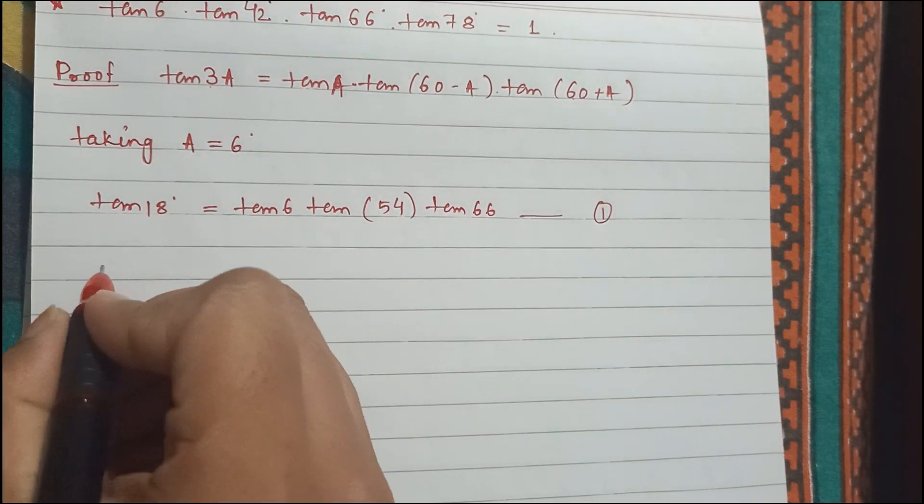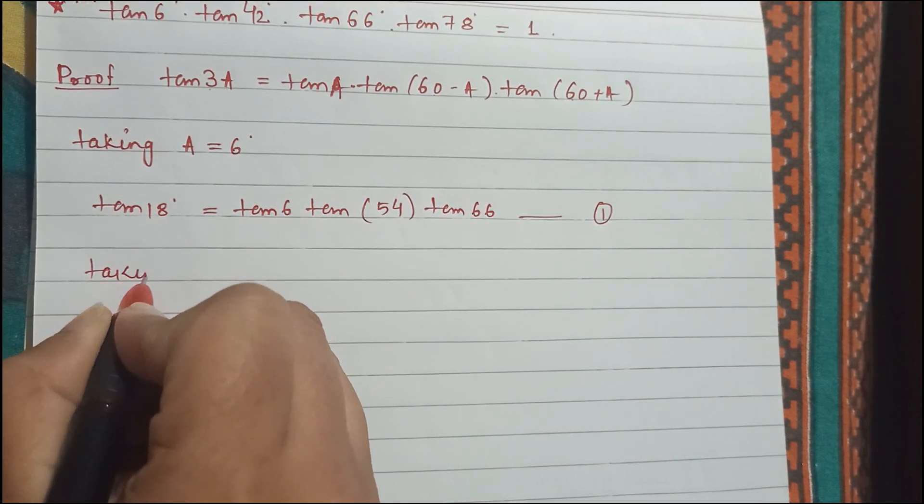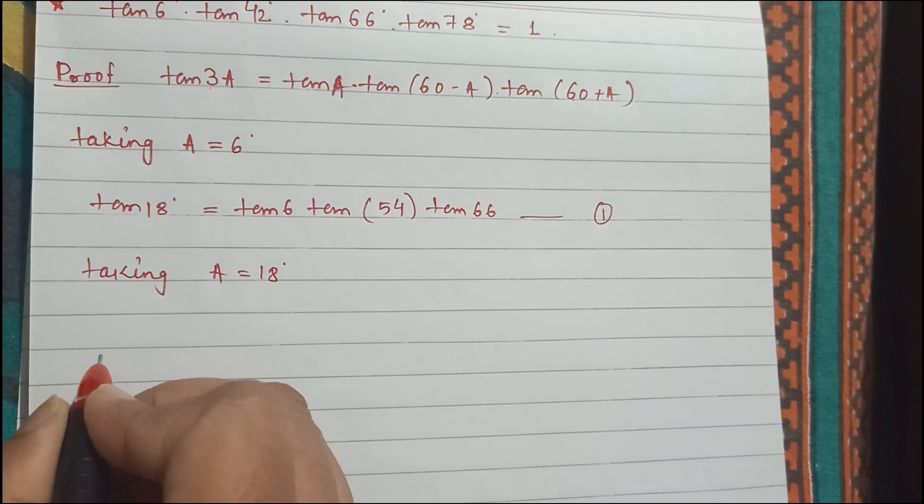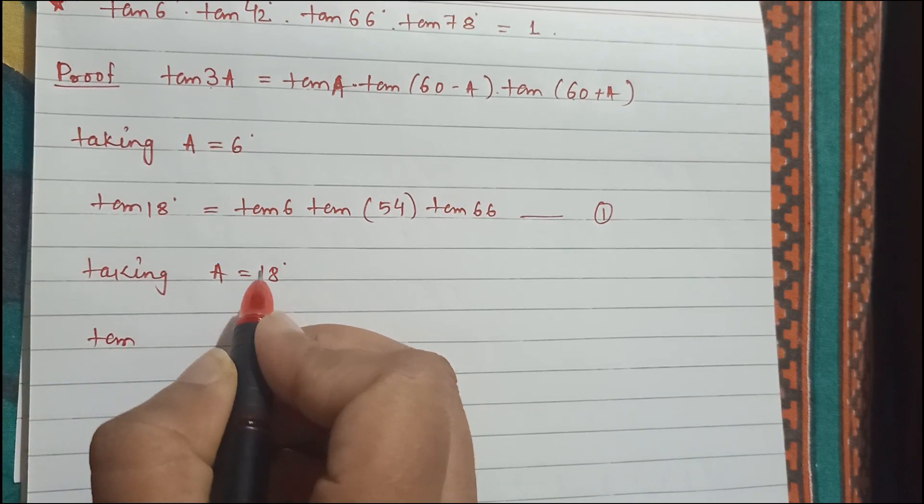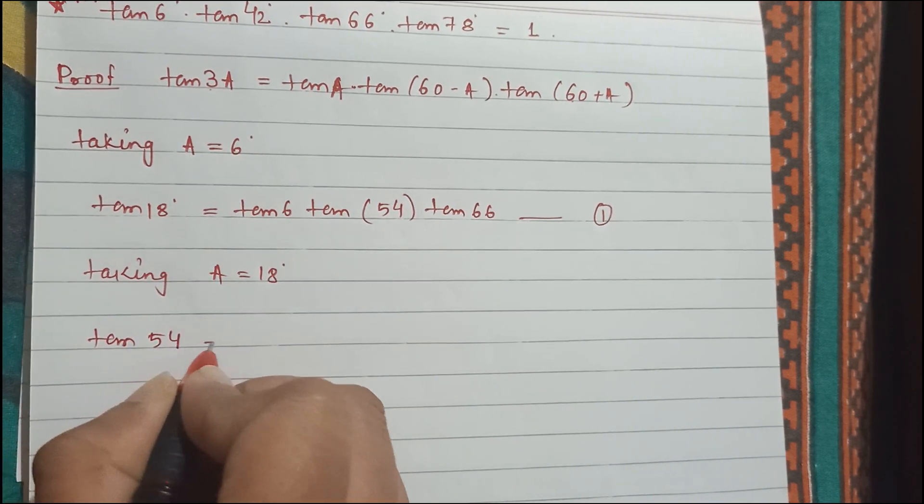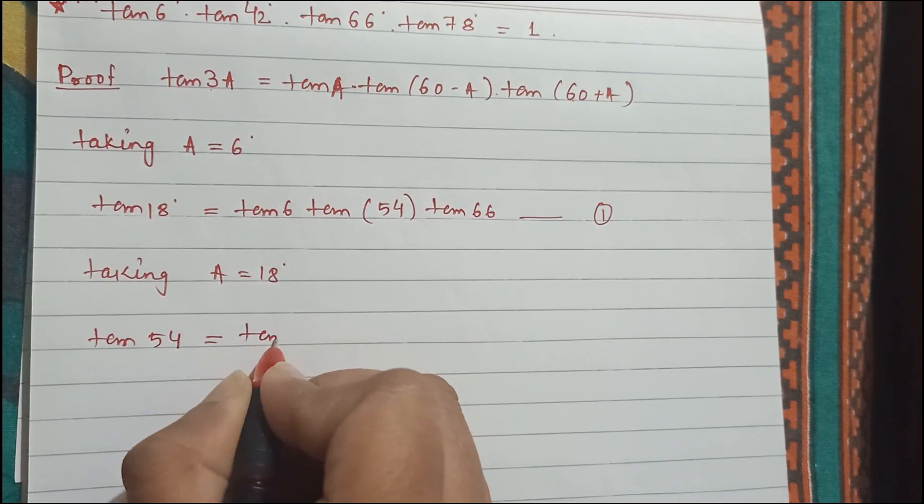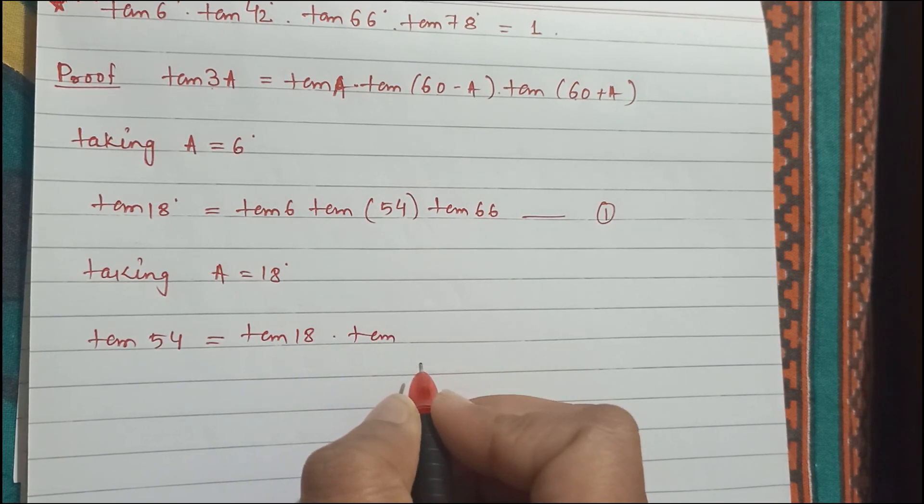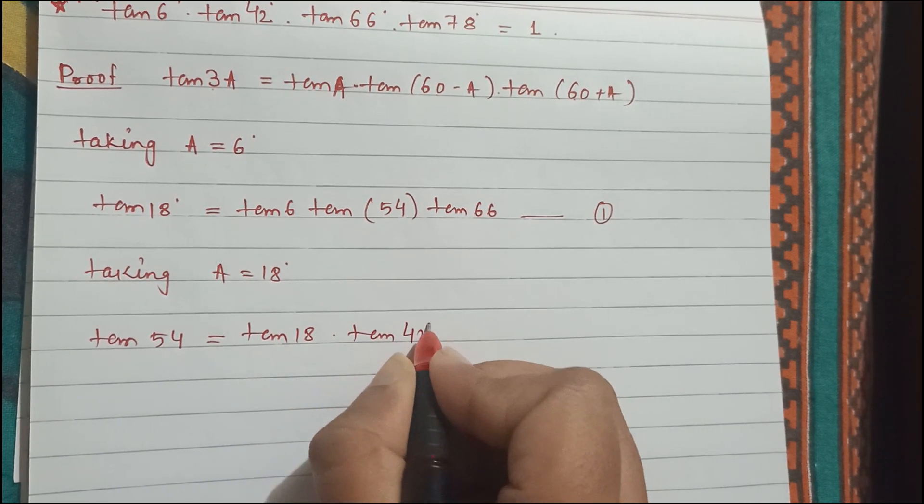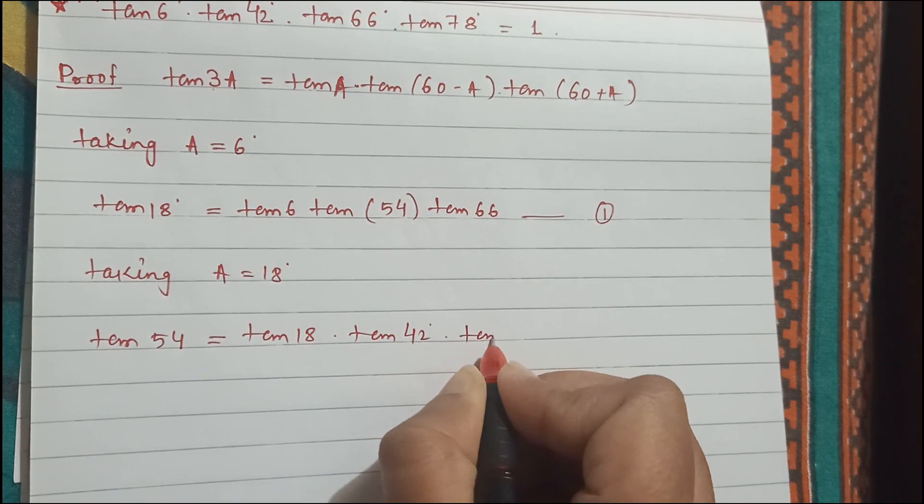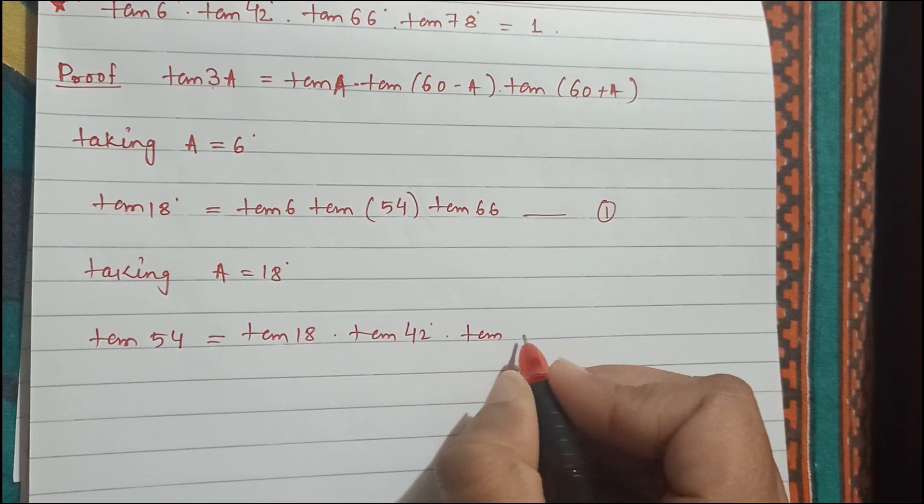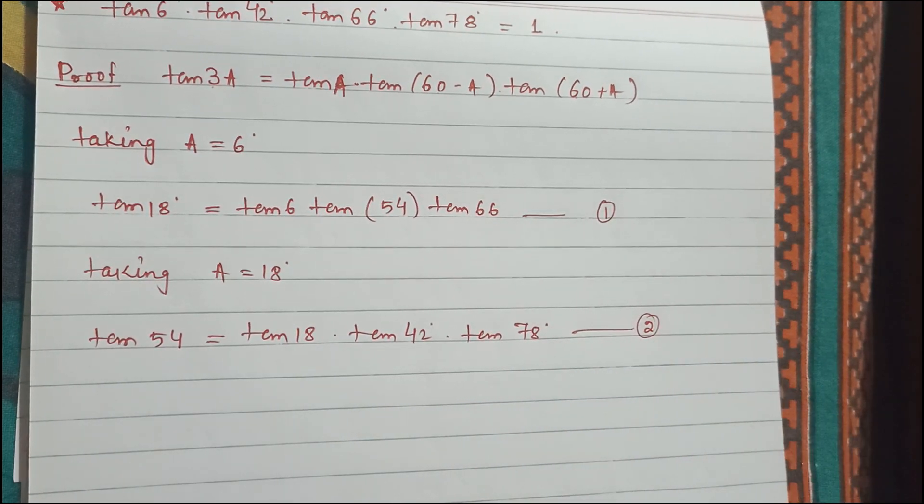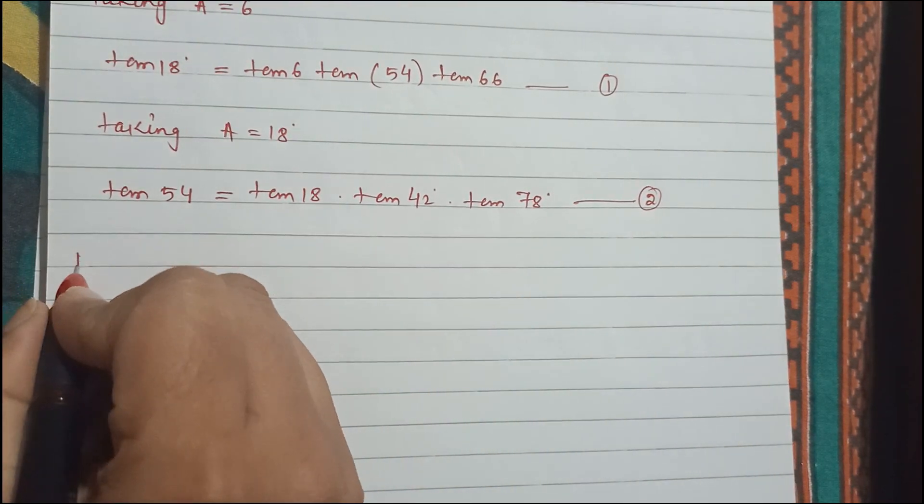Next taking a equals to 18 degree, we will get tan 54 equals to tan 18 degree into tan 42 degree into tan 78 degree, and this one we will name it as equation 2.